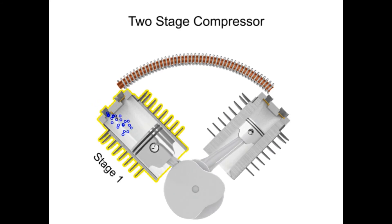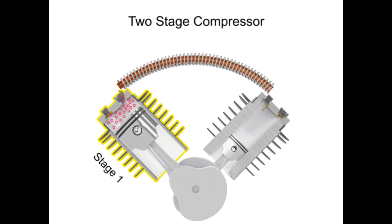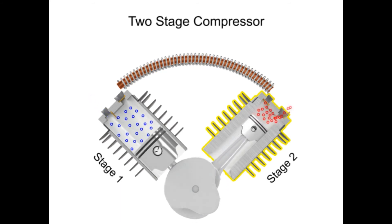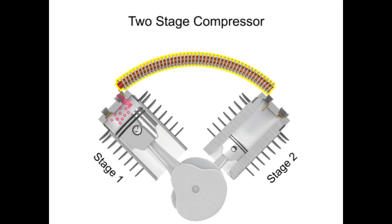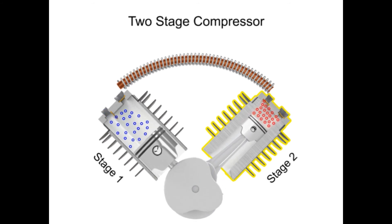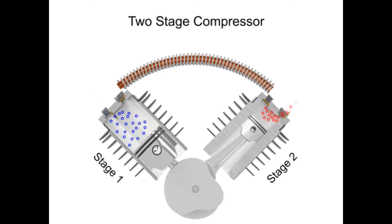The air is compressed in the first stage, which is typically the largest stage, then cooled, then compressed in a second stage. The hot compressed air from the first stage is conducted to the second stage through finned tubing, which is exposed to the air from a flywheel fan. After the air is cooled within the tube, the compressed air enters the second stage to be compressed even further. The compressed air entering the second stage is sometimes called supercharged air.